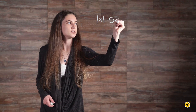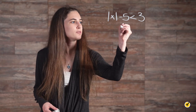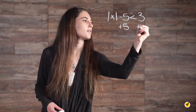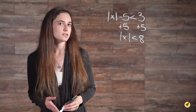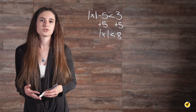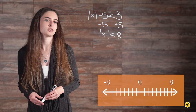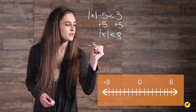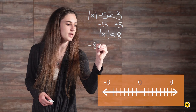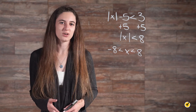Say you had the absolute value of x minus 5 is less than 3. The first step is to isolate the absolute value of x by adding 5 to both sides of the inequality. That gives us the absolute value of x is less than 8. This answer suggests that x is less than 8 spaces from 0 in either direction. Therefore, we write the answer as negative 8 is less than x, which is less than 8.